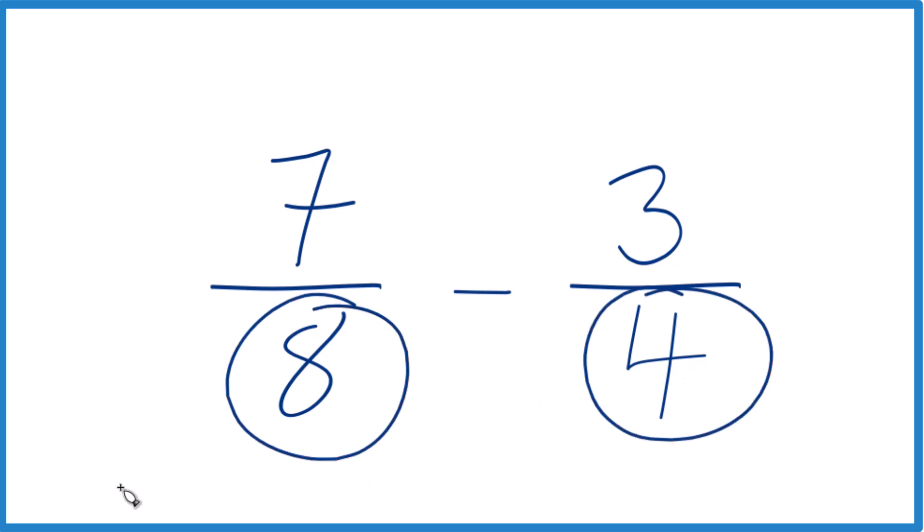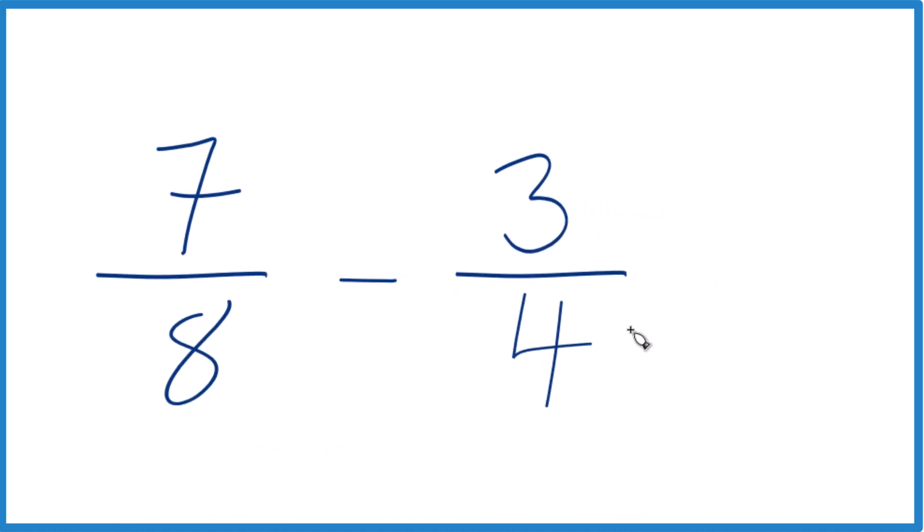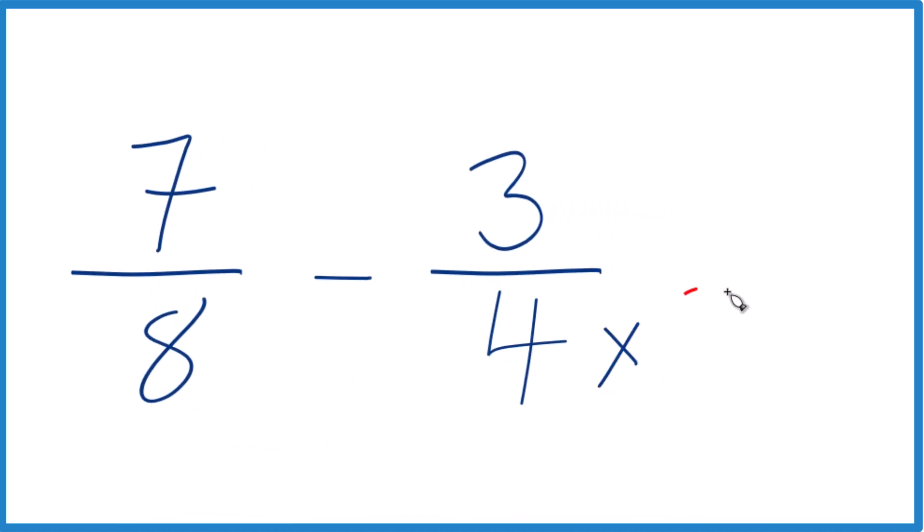So what we could do is 4, 2 times 4 is 8. So let's just say 4 times our 2 here. That would give us 8.